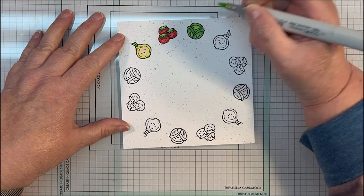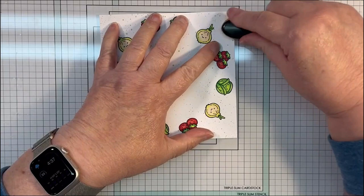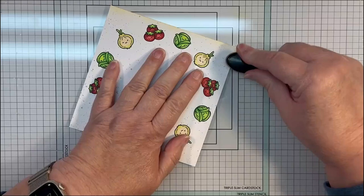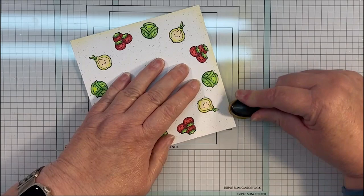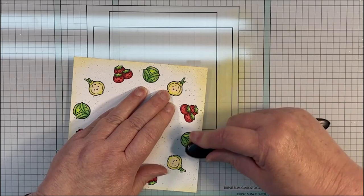I want to soften the edges of that paper just a smidgen so that it's not so harsh on the orange gingham background. So I'm going to go in with some Mustard Seed Distress Oxide ink. I'm actually not even going to put my brush in the ink. I have plenty left over in my brush from other projects. I'll just go around the edges and just kind of touch those up a little bit.